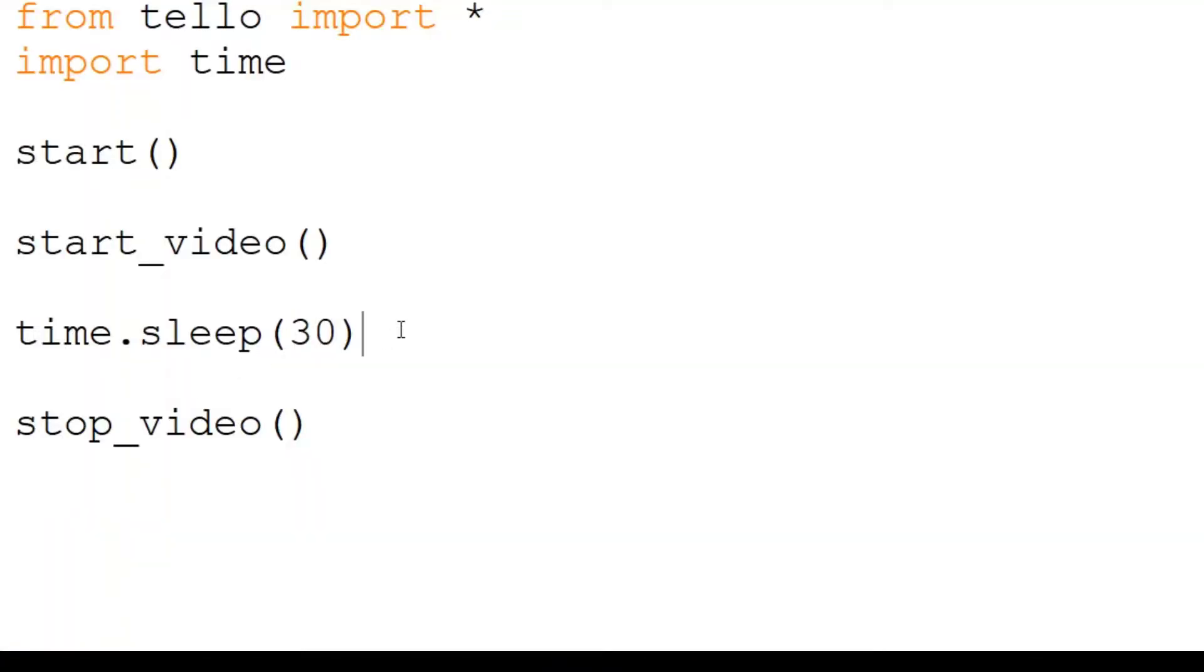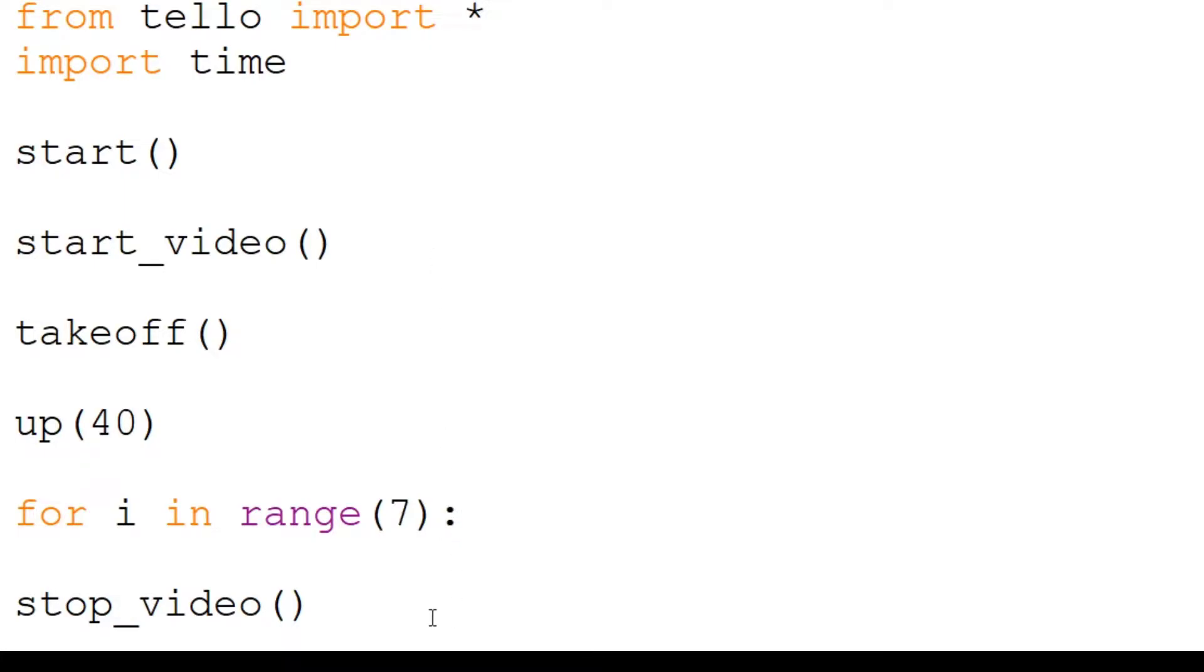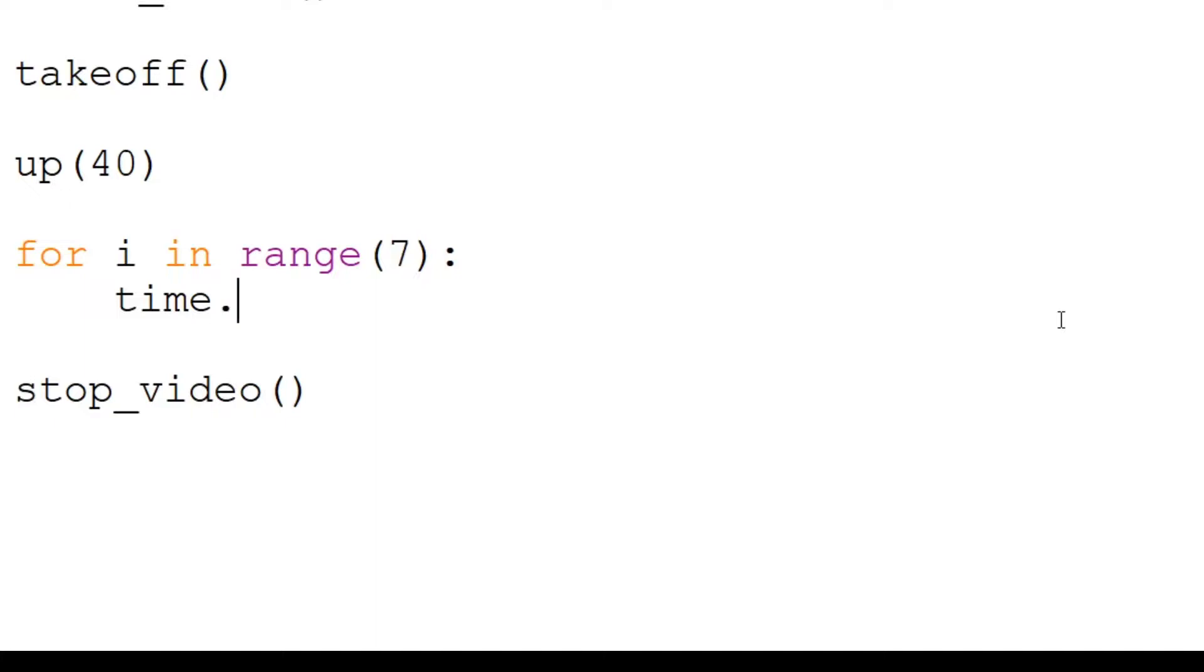We will start by removing the 30 second delay. We will then launch the drone with takeoff and move it 40 centimeters up to our first row with the up command. We want to move our drone right seven times. To loop the code, we type for i in range(7), followed by a colon. Then on an indented line, we will pause for one second and then move right 30 centimeters. Finally, we will land. Make sure you dedent the land command so that it properly matches up to the left side of our program.